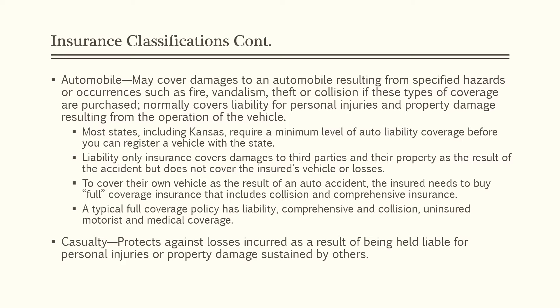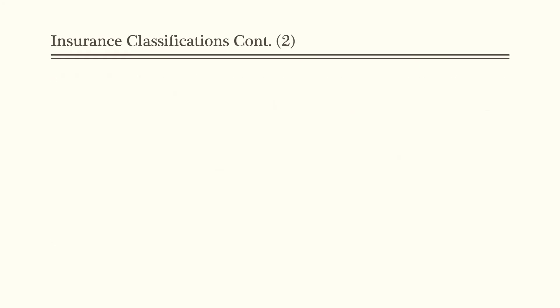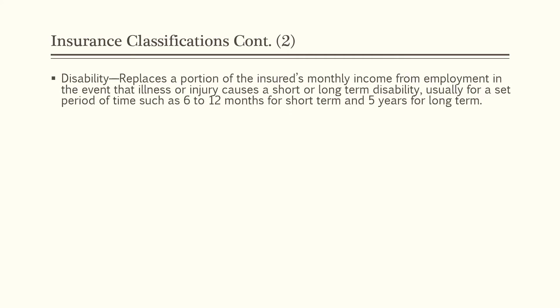The next type of insurance is casualty insurance, and it protects against losses incurred as a result of being held liable for personal injuries or property damage sustained by others. Next we will discuss disability insurance. This replaces a portion of the insured's monthly income from employment in the event that illness or injury causes a short or long-term disability, usually for a set period of time, such as six to twelve months for a short-term disability and up to five years for a long-term disability. Many employers offer disability insurance to their employees as part of their benefits.